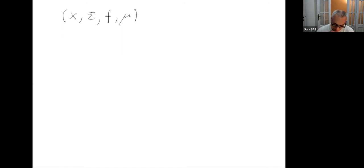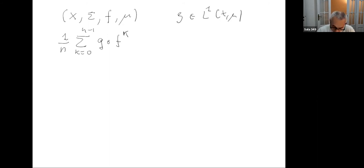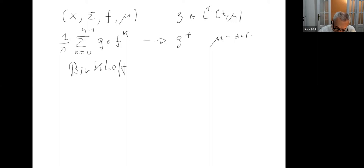One would like to study properties of such a system, and one basic fact is the Birkhoff theorem, which says that indeed, if you look at (1/N) times the sum for k going from 0 to N minus 1 of G composed F^k, where G is an L1 function, this will converge to something. This is Birkhoff's theorem, and this happens when N goes to infinity.